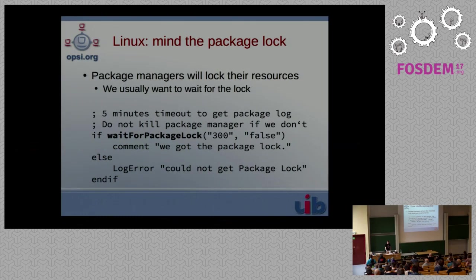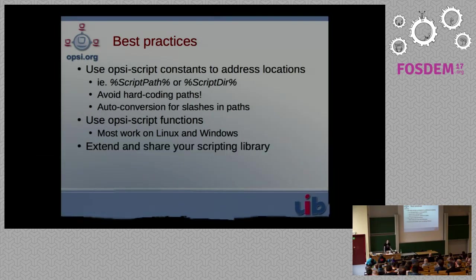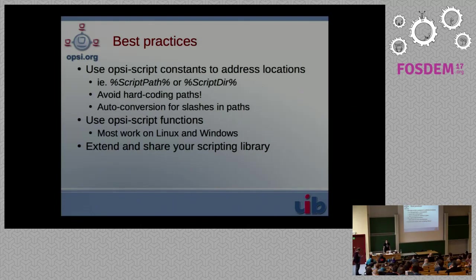As you've now seen what is possible, I want to give you some best practices we usually deploy when writing scripts that should run on different platforms. First: use the OpsiScript constants like the script path to avoid hard-coding paths. Hard-coding paths — even if you're just writing for Linux now — may mean the day comes when you need to change all your scripts because you hard-coded a path and now want to run this on Windows. To make things easier, OpsiScript will do an automatic conversion of slashes in the path, so you don't have to worry about whether it's a forward slash or a backward slash. The downside is you can't put slashes in file names, but that's fine.